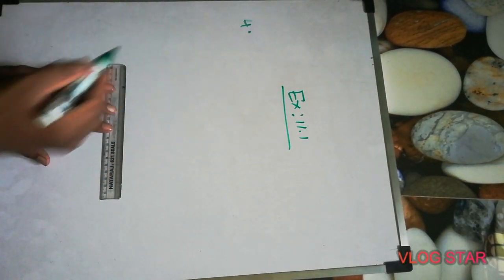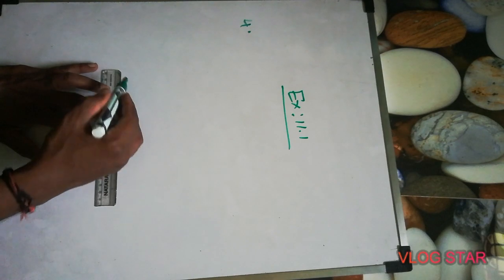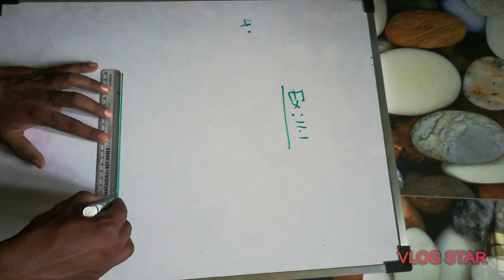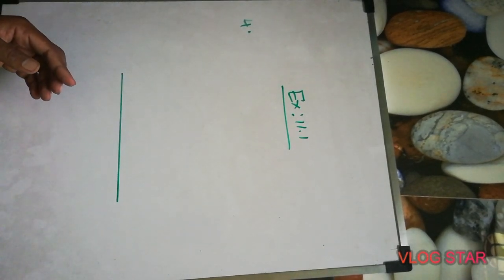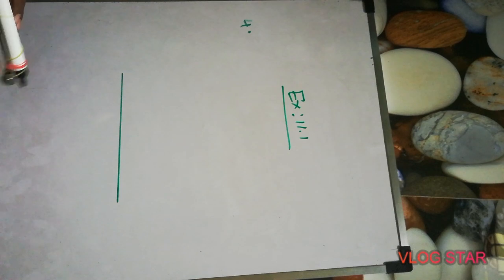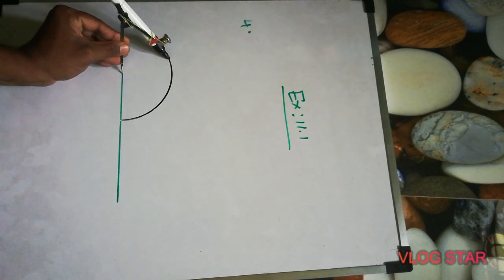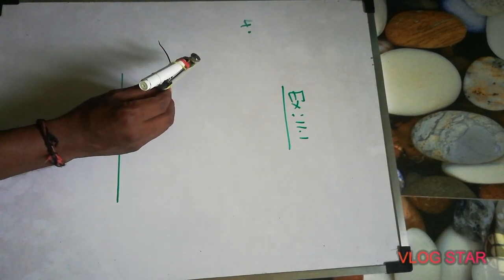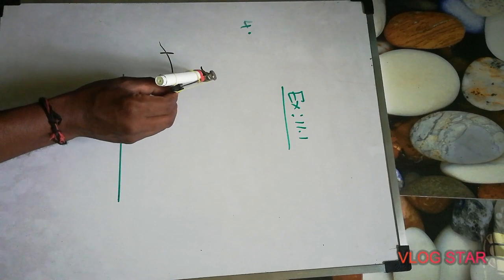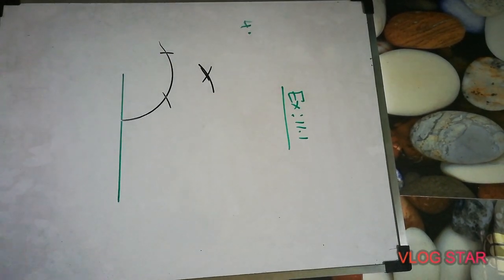Question number four: construction of 75 degrees, 105 degrees, and 135 degrees — verify by measuring with a protractor. For 75 degrees you have to make first 90 degrees. So we'll make any radius arc. 90 degrees — we already did two questions, so I'll show you again: make an arc, then from that arc cut two times, and same time cut upside again. That is 90 degrees.